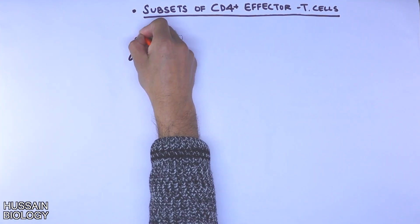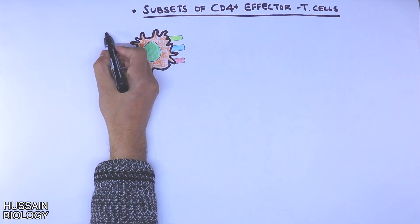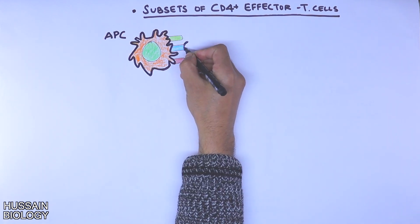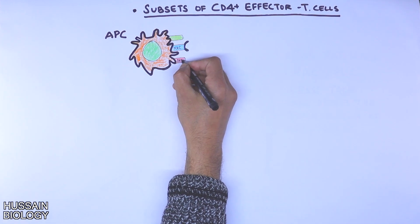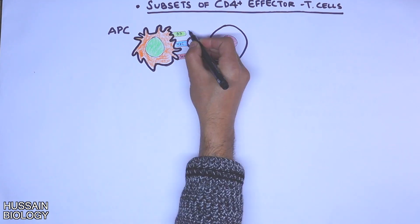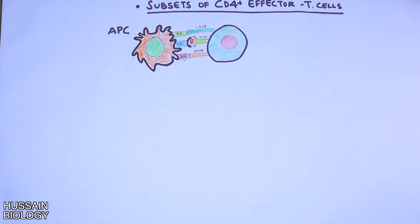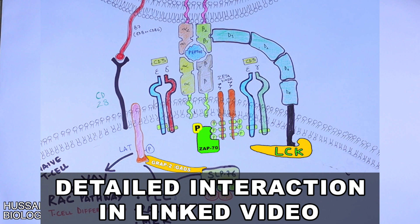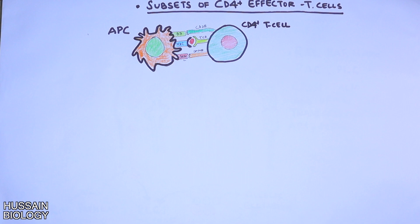In this diagram we have the antigen presenting cell (APC) which has different proteins on its membrane like B7, MHC2, and OX40 and many other proteins. This APC interacts with CD4-positive cells via corresponding molecules: B7 interacts with CD28, MHC2 interacts with TCR, CD4 interacts with MHC2, and OX40 with OX40 ligand. The detailed interaction between APC and T cell has been discussed in the previous video linked in the description.